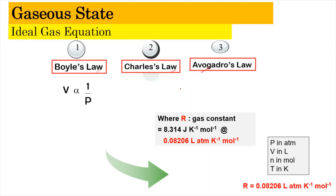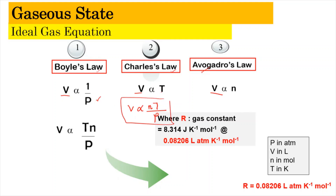According to Boyle's law, volume is directly proportional to 1 over pressure. For Charles' law, it was stated that volume is directly proportional to temperature in the unit of Kelvin. And for Avogadro's law, it was stated that volume is directly proportional to the number of moles. From here, we can make a relationship where volume is directly proportional to n times T over P, combining all three relationships into one.